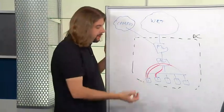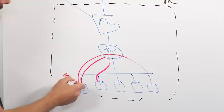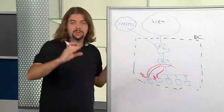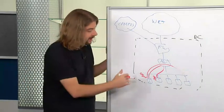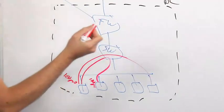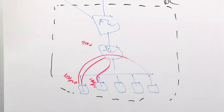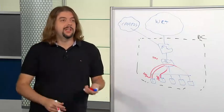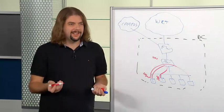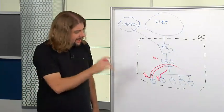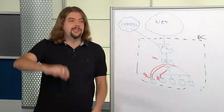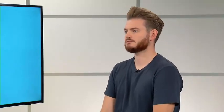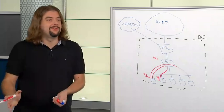If each workload has 100 unique microsegmentation policies, and you have two hosts, that's already 200 rules on the switch. There are two problems: first, manageability — we've all seen a firewall with a million ACLs. Second, performance — at some point, so many rules to process will have a performance impact on whatever box is doing the enforcement.